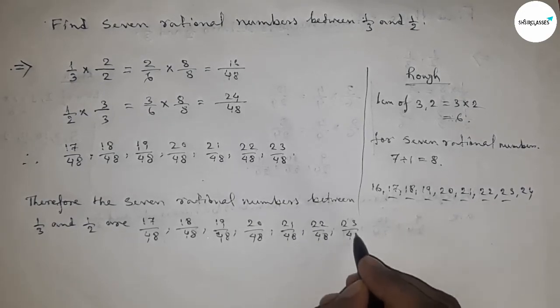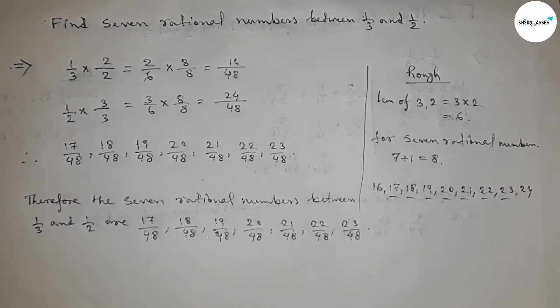So this is the process to find out the seven rational numbers between 1 upon 3 and 1 upon 2. That's all. Thanks for watching. Please subscribe, like, and comment on my video.